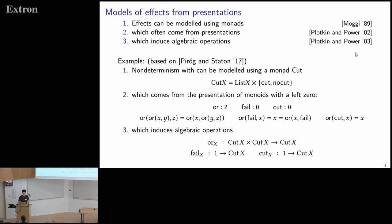For example, there is a monad for interpreting non-determinism with cut: a computation is essentially a list of results plus a tag that says either cut or no cut. This has a presentation in terms of or, fail, and cut operations, and we get free algebraic operations for the monad to interpret the non-deterministic choice plus the cut operation.